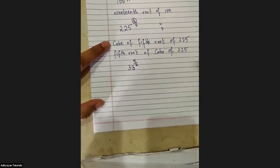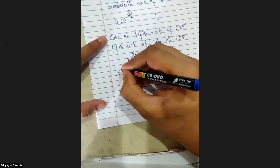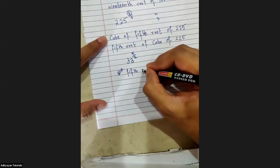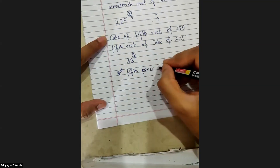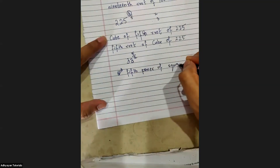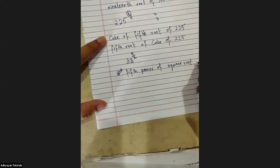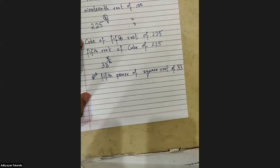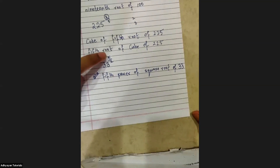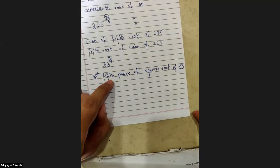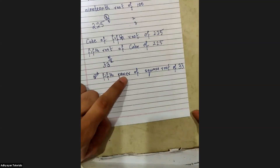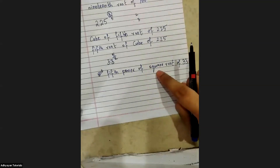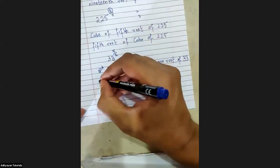If I want to say power first, I'll read it like this: fifth power of square root of 33. And if I have to write order or root first and power later, I'll write: square root of fifth power of 33.